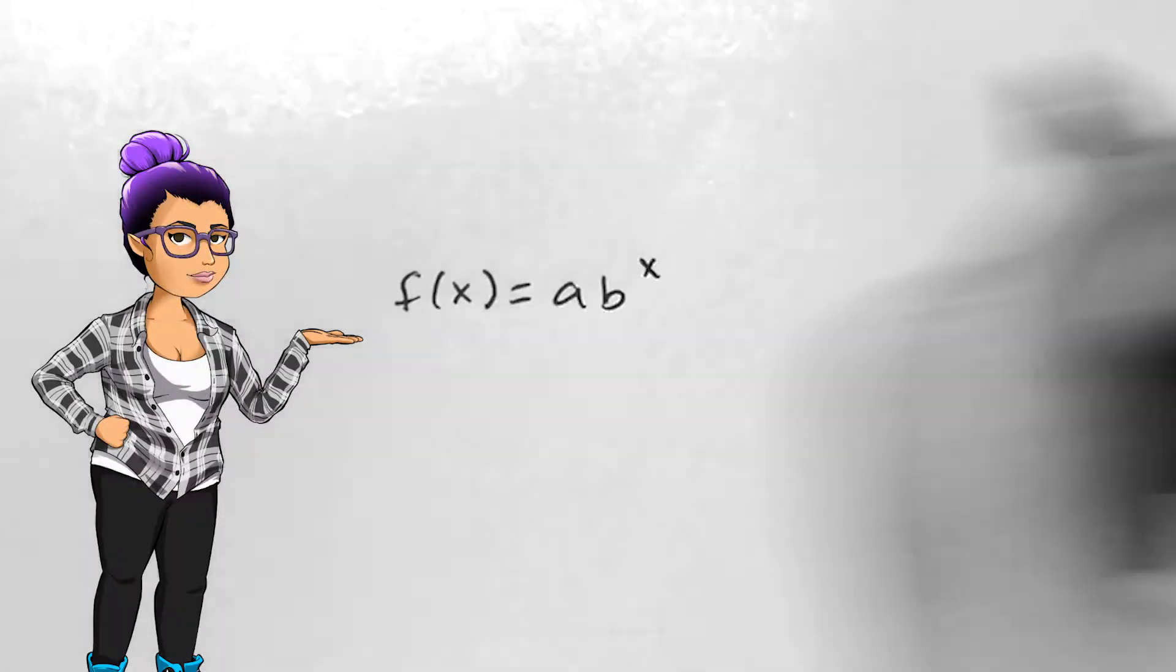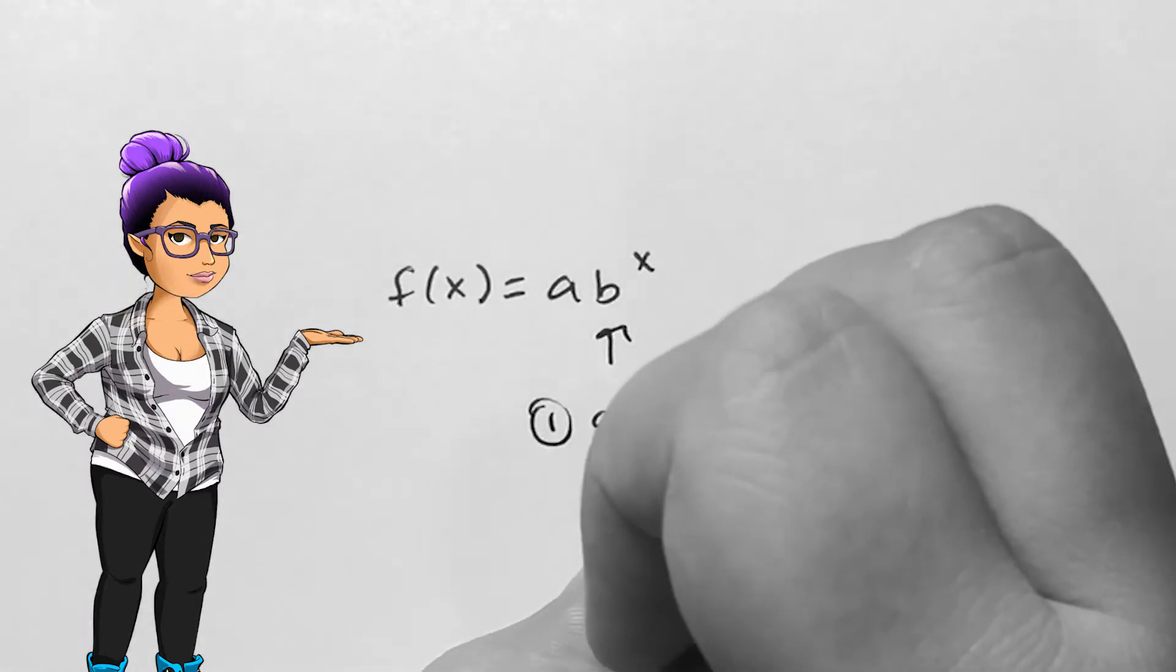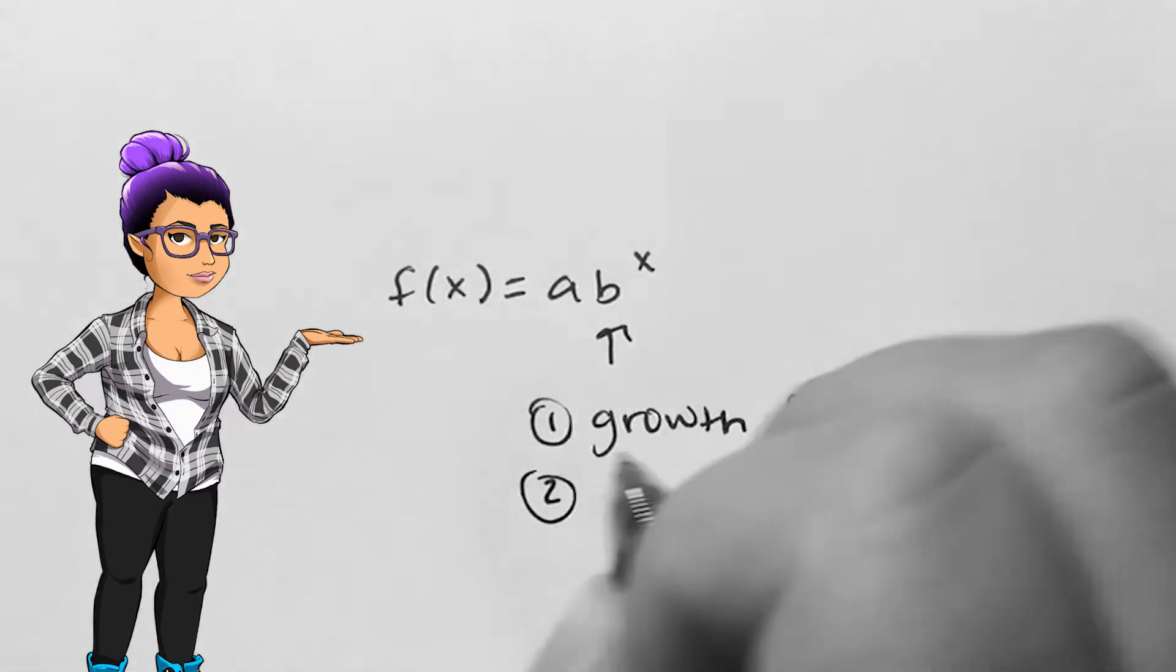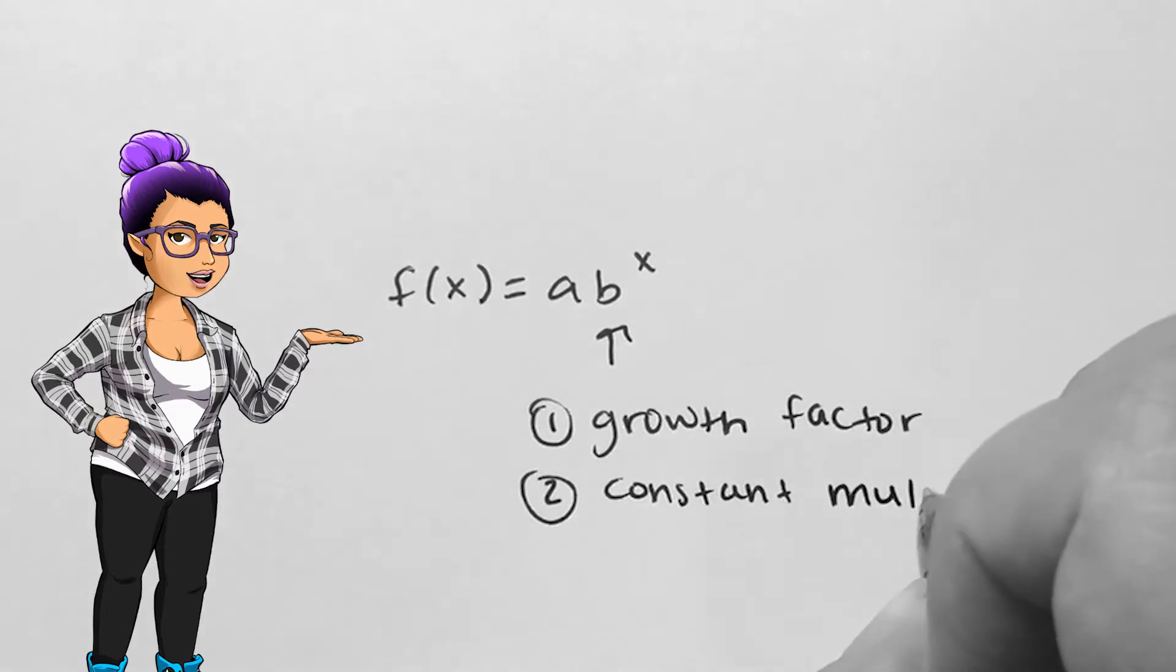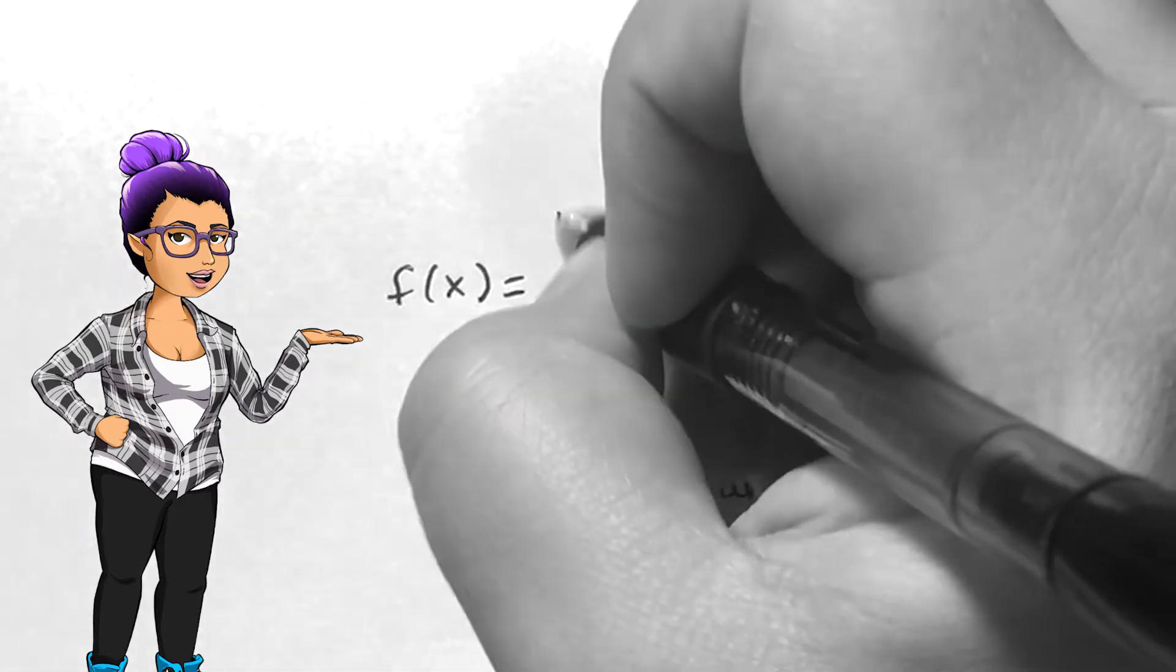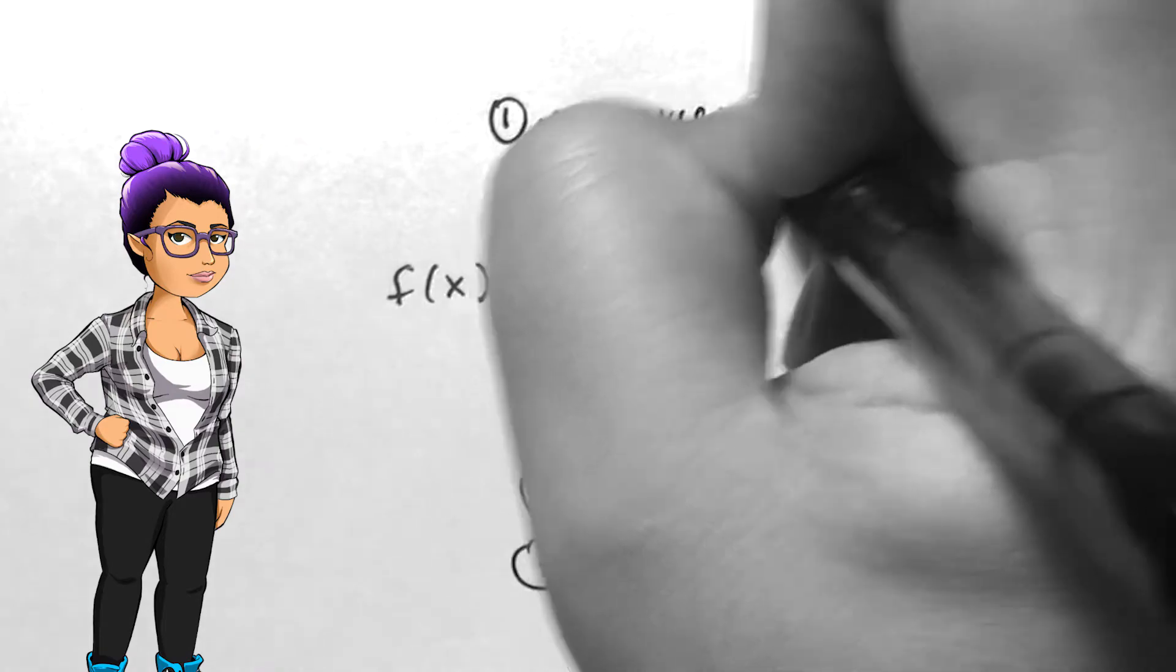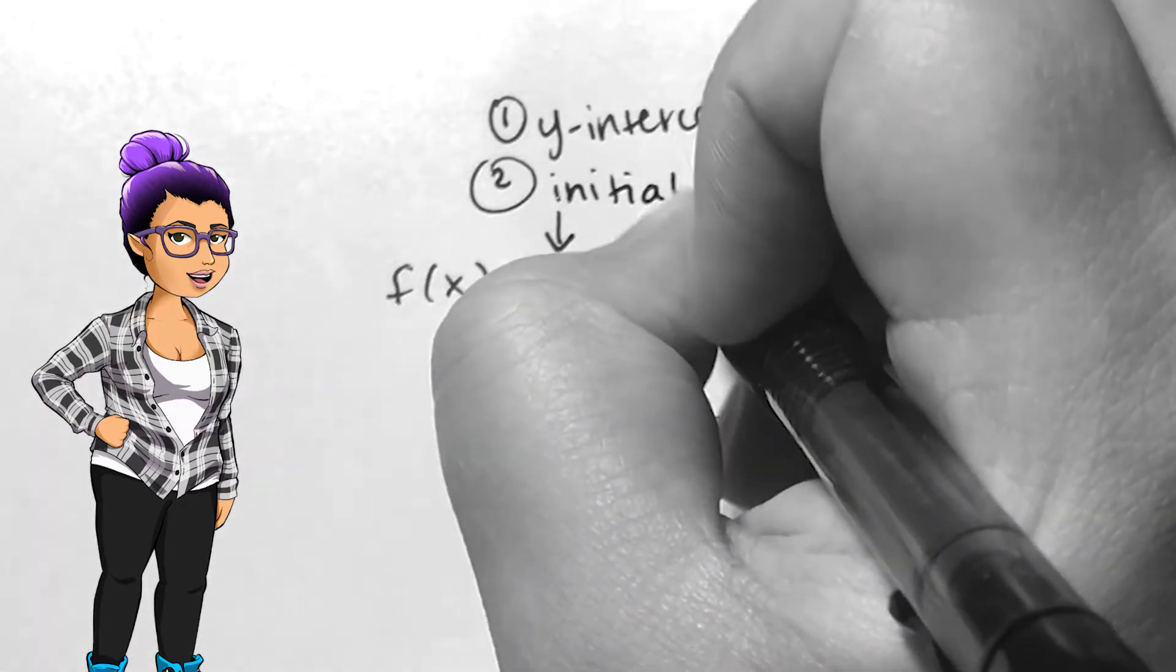An exponential function f(x) has algebraic representation f(x) = ab^x, where b is the growth factor, constant multiplier, or base of the exponent, while a is the y-intercept or initial value.